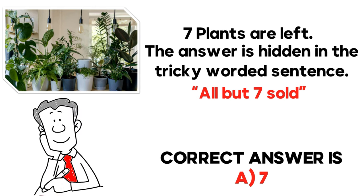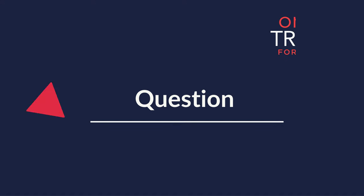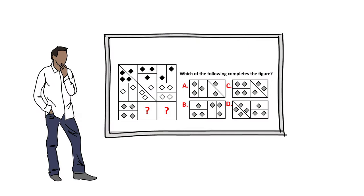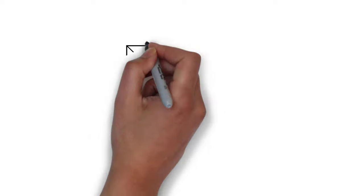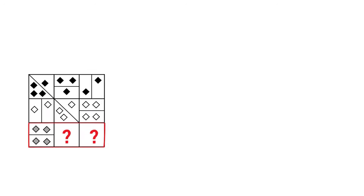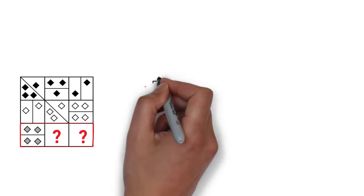When you see a question like this you might ask yourself how can it possibly be even more confusing. Let's look in more detail. You're presented with a 3x3 matrix; two of the shapes in the matrix are missing — they are located in the bottom row — and you have four possible choices: A, B, C, and D. Give yourself 10 to 30 seconds to see if you can come up with the answer.